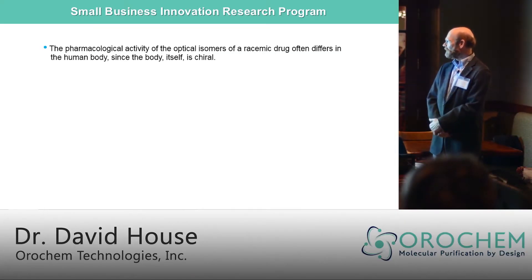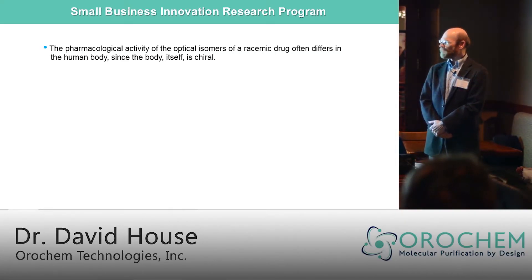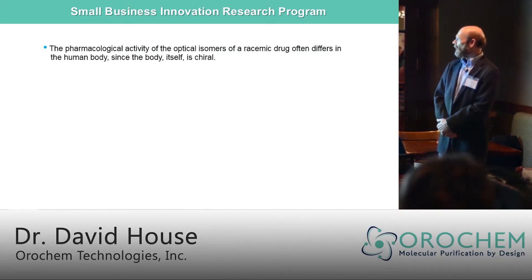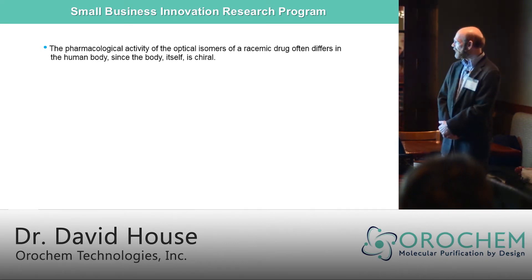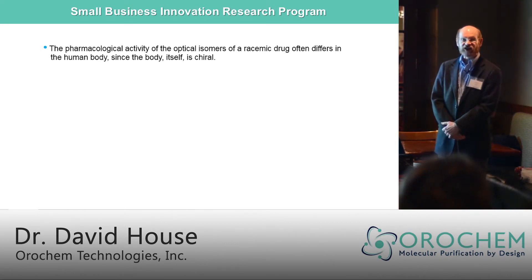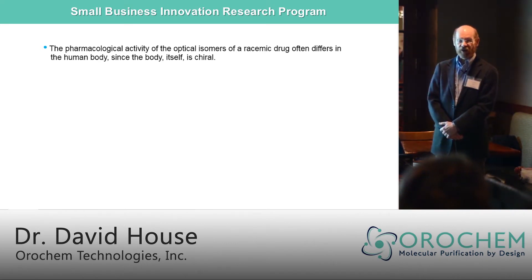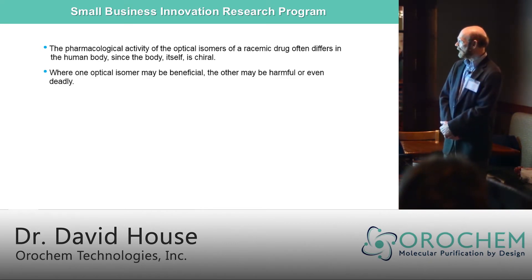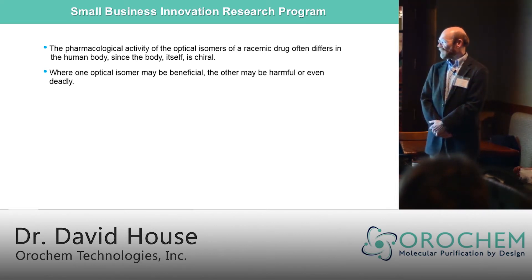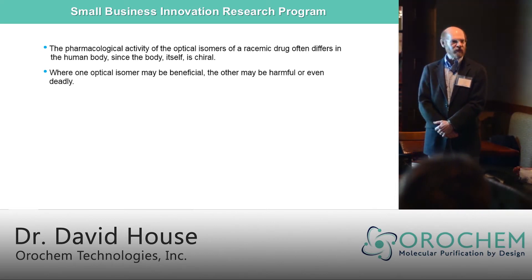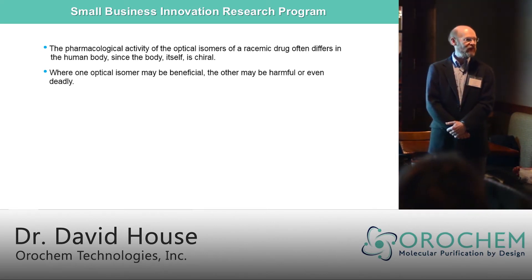The pharmacological activity of optical isomers of racemic drugs often differs in the human body, since the body itself is chiral. Where one optical isomer may be beneficial, the other may be harmful or even deadly.